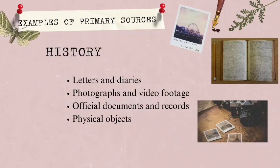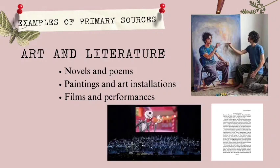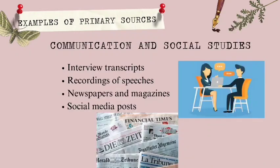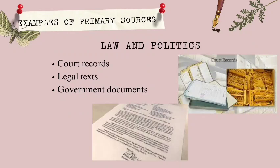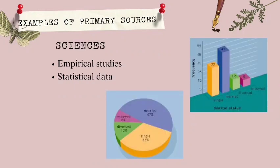Here are examples of primary sources based on different perspectives. For history, we have letters and diaries, photographs and video footage, official documents and records, and physical objects. For art and literature, we have novels and poems, paintings and art installations, and films and performances. For communication and social studies, we have interview transcripts, recordings of speeches, newspapers and magazines, and social media posts. For law and politics, we have court records, legal texts, and government documents. And for sciences, we have empirical studies and statistical data.